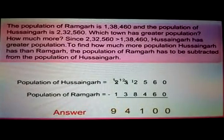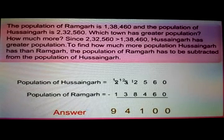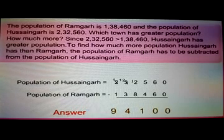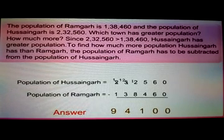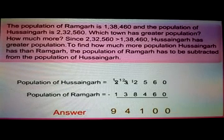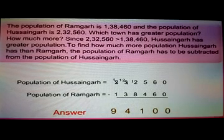Now let us see one problem related to subtraction. The population of Ramgurh is 1,38,460 and the population of Hussain Garh is 2,32,560. Which town has a greater population, and by how much? Since 2,32,560 is more than 1,38,460, Hussain Garh has the greater population. To find how much more, subtract the population of Ramgurh from the population of Hussain Garh. That gives the answer 94,100.